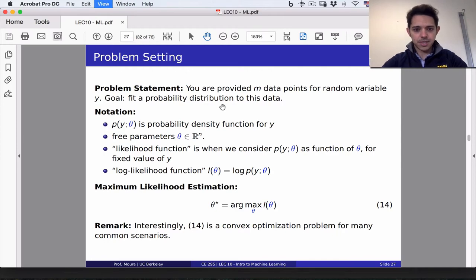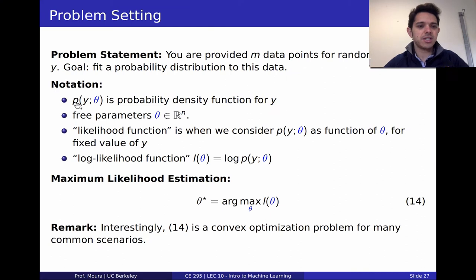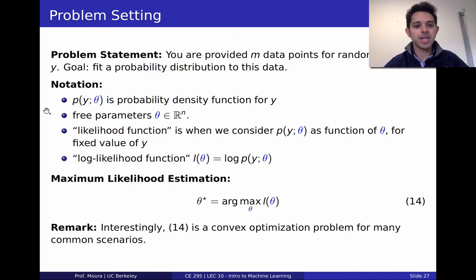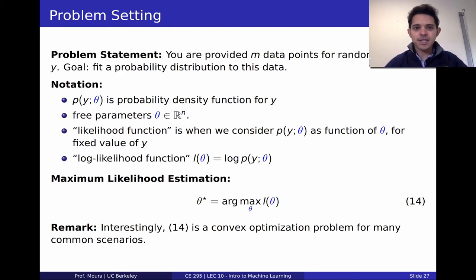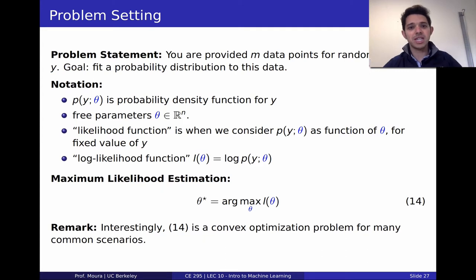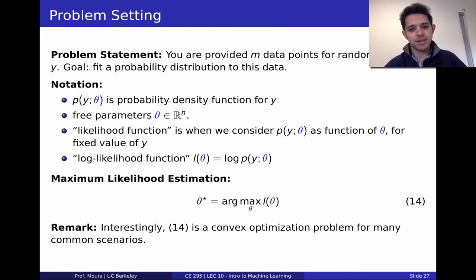We're going to denote p of y semicolon theta to be the probability density function, PDF, for random variable y. Theta are the free parameters — an n by 1 vector — that we would like to identify or fit to our data. This is another type of regression problem. Our model is a probability density function, and the free parameters are given by theta.